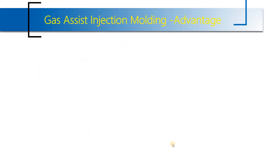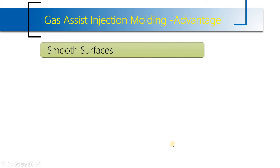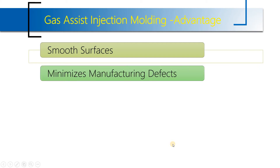Now I will talk about the advantages. The first advantage is a smooth surface, because the surfaces produced in contact with the inert gas are totally smooth. The next benefit is minimized manufacturing defects — because of this gas assist injection molding process, defects are very few.